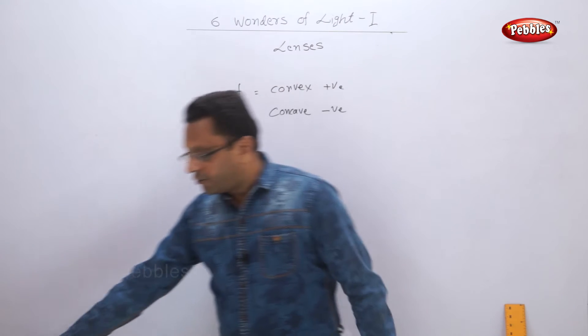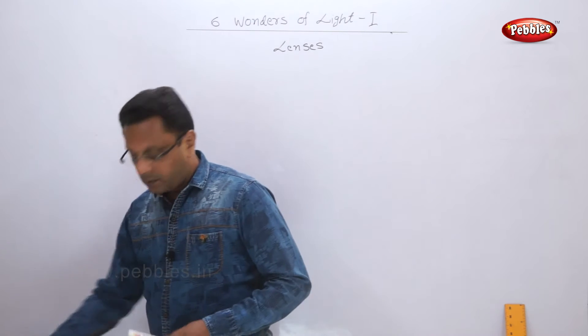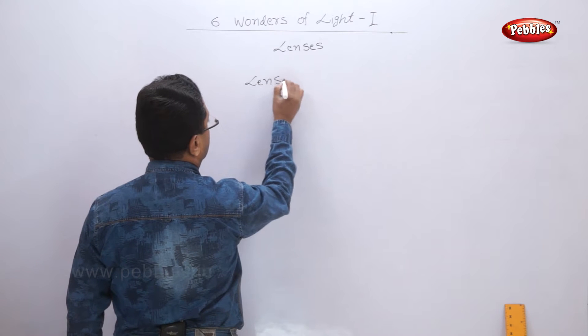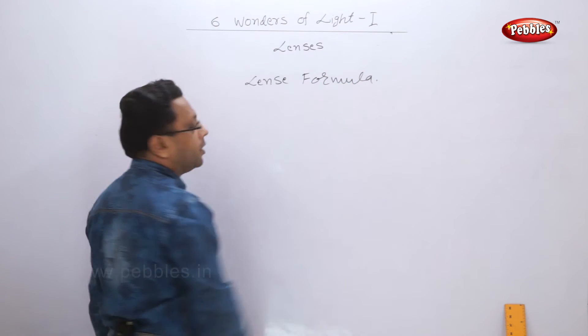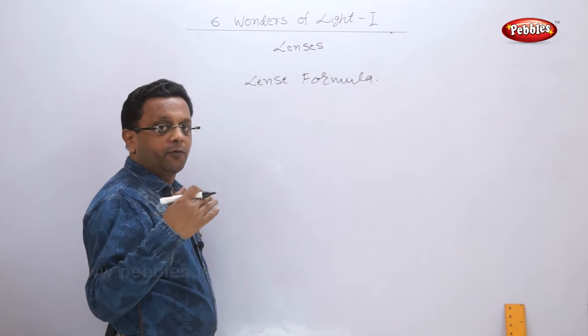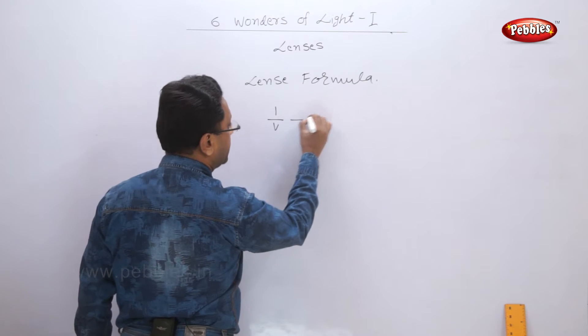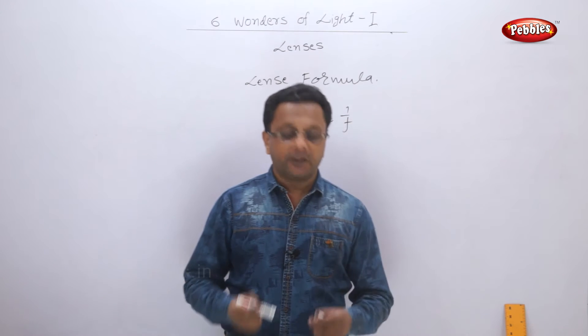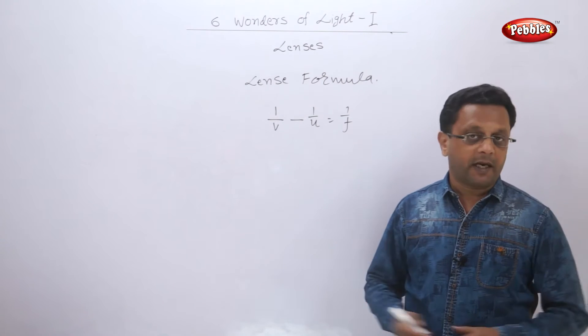Just like our mirror formula, we have the lens formula here. The mirror formula and lens formula have only one difference: here it's 1/v minus 1/u equals 1/f. In case of mirrors it was plus, but in case of lenses it is minus.